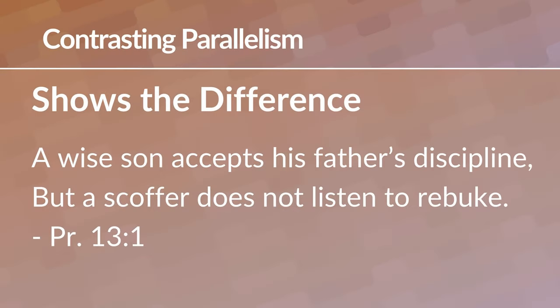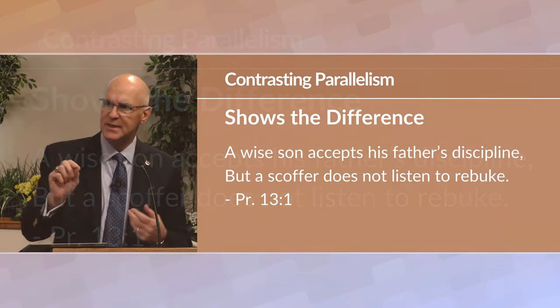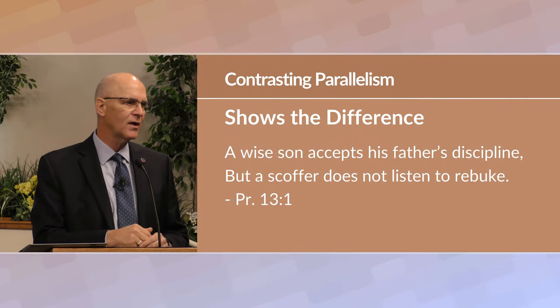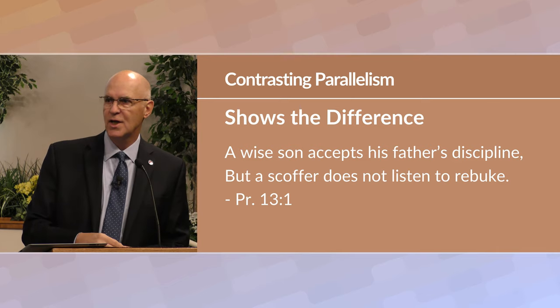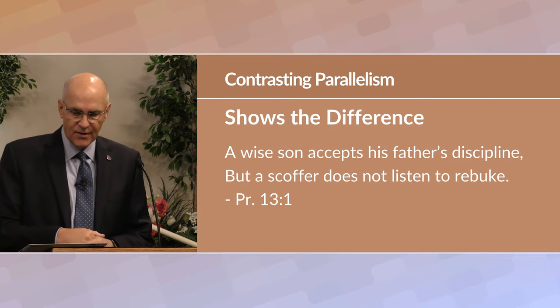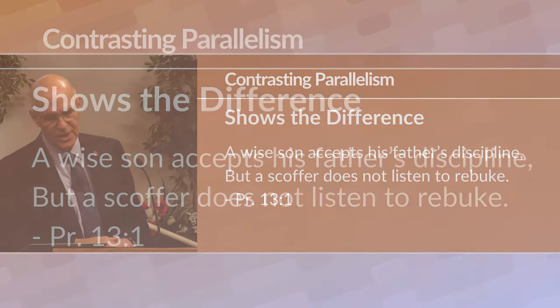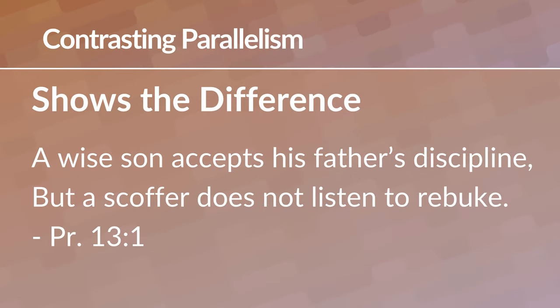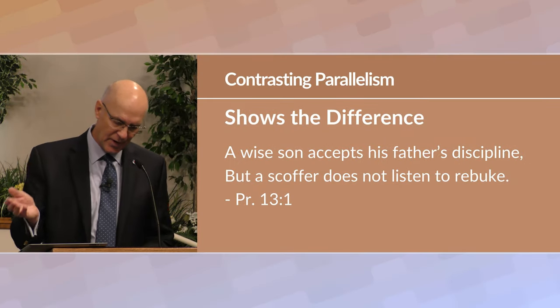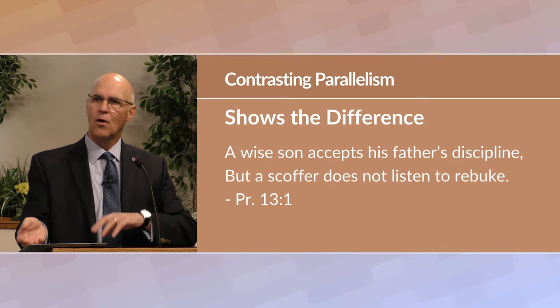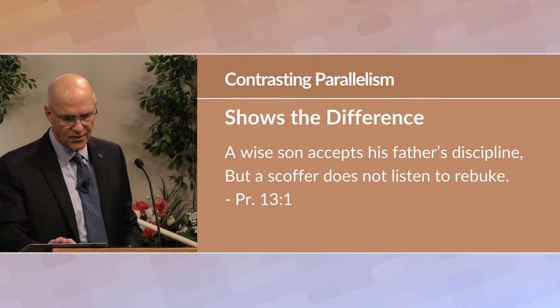For example, there is a device called contrasting parallelism, which shows the difference. Before we move on to chapter seven, here are some examples. Proverbs 13:1 — 'A wise son accepts his father's discipline, but a scoffer does not listen to rebuke.' There you have contrasting parallelism: a wise son does this, a scoffer does that.